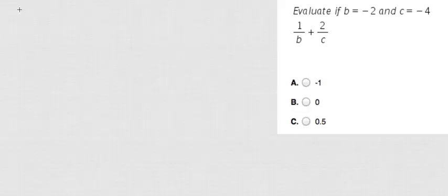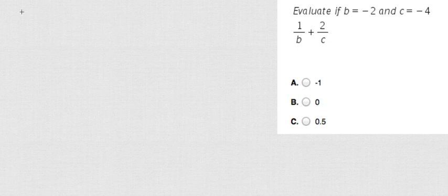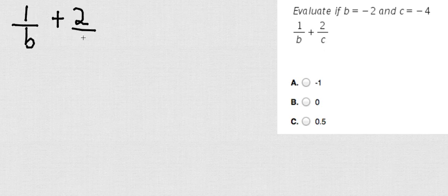Okay, so here we have: if b equals negative 2 and c equals negative 4, what is the value of 1 over b plus 2 over c?